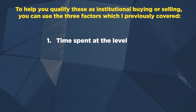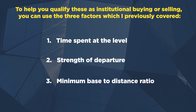I go into the specifics of how much time is too much time using the rule of six, but I won't cover that here. Number two: strength of departure, which deals with how fast price moves away from the level. And number three: minimum base-to-distance ratio, which deals with a set amount of distance price must travel in order to validate it as institutional buying or selling. There are a lot of small details in the three factors, which is why I've previously talked about it extensively. Do check out those videos next, because spotting institutional buying and selling can help you pinpoint reversals with high accuracy.